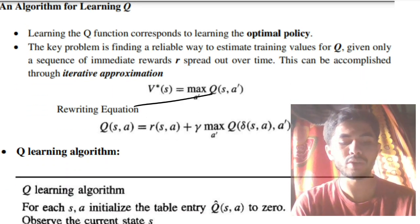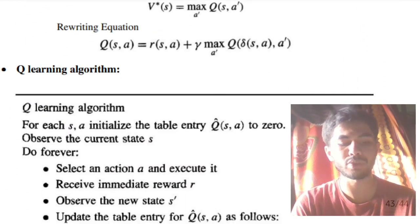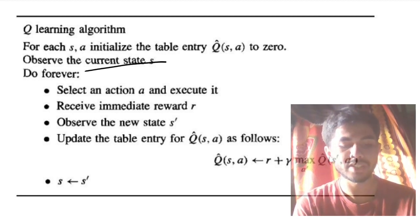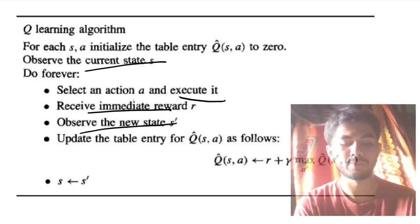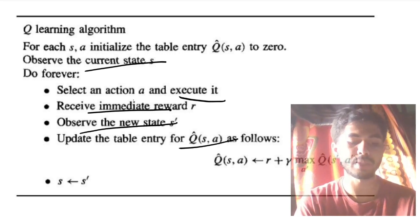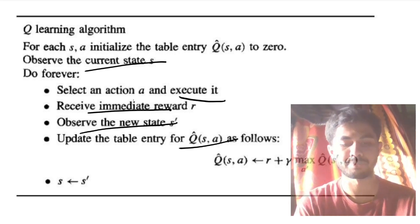Algorithm is simple: calculate, find out the best, and assign it. Here also it is the same. Observe the current state S, select an action, execute it, receive the reward, observe the new state, update the entry, and again keep on doing until you reach the final state. That was about the algorithm.